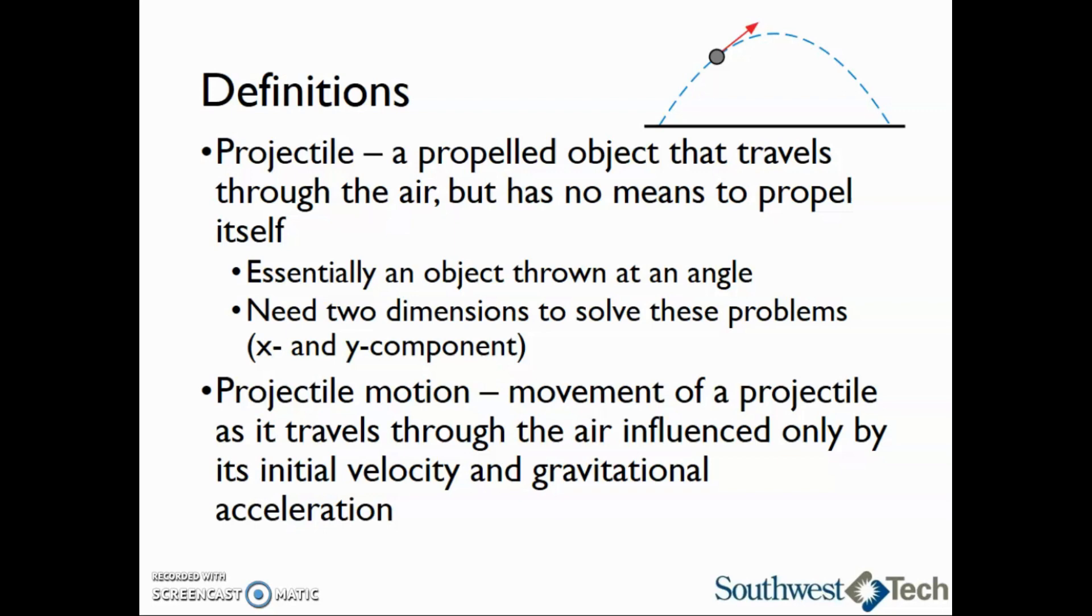Projectile motion is defined as the movement of a projectile as it travels through the air, influenced only by its initial velocity and gravitational acceleration.